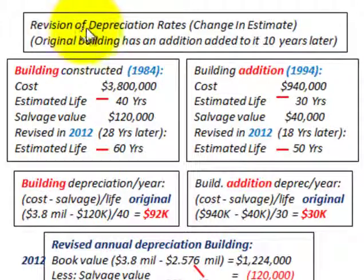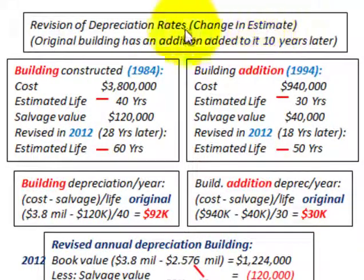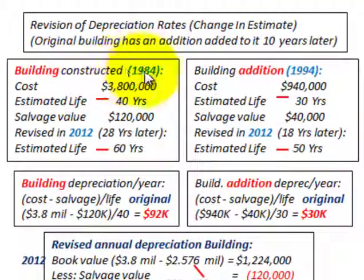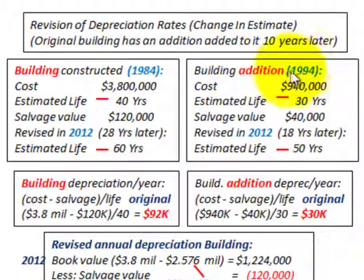What we're going to be looking at here is a revision in depreciation rate — a change in estimate. We're going to look at an example where we have an original building with an addition added to it ten years later. The building was constructed in 1984 and the addition was added in 1994, ten years later.